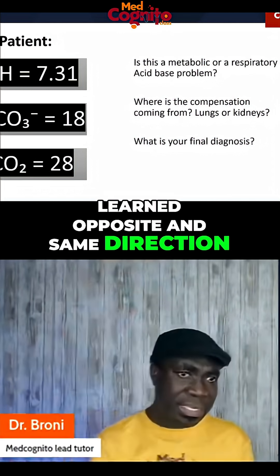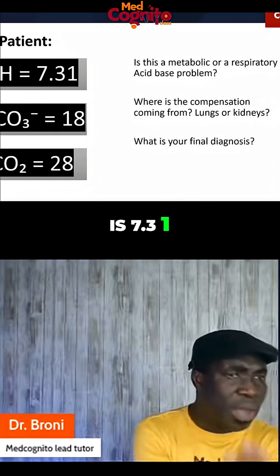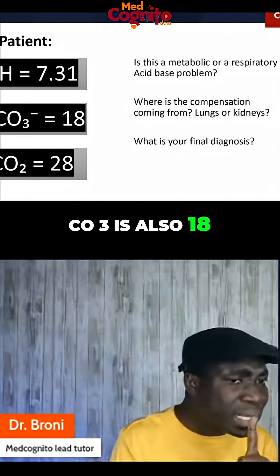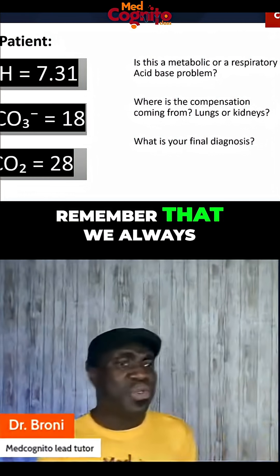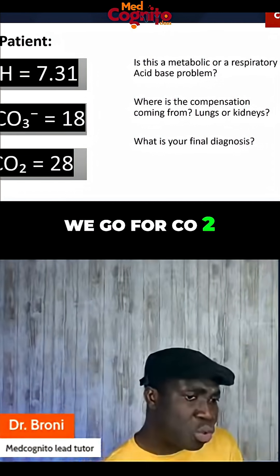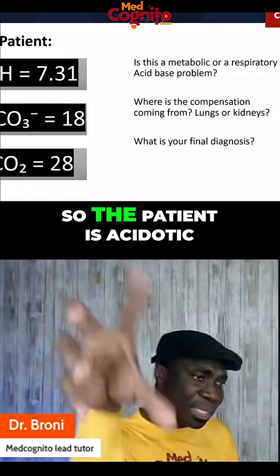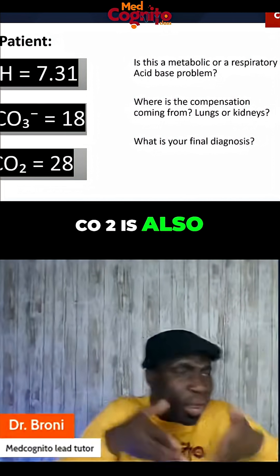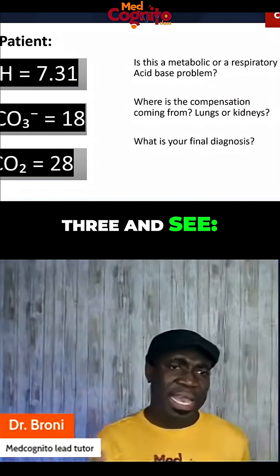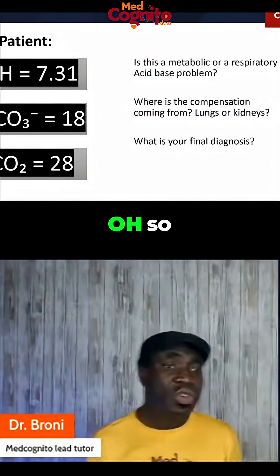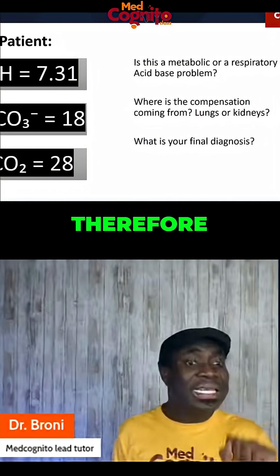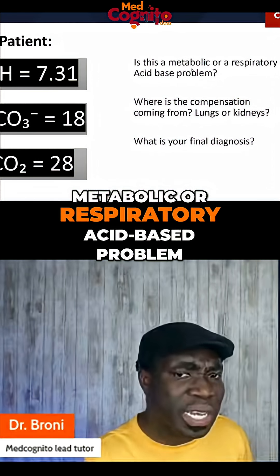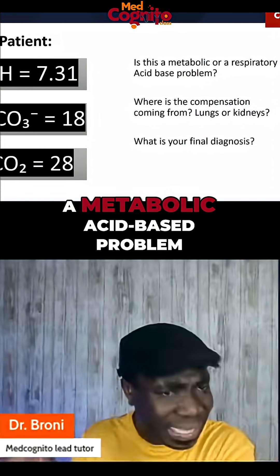Don't forget what we learned — opposites and same direction. pH is 7.31, so this is an acidosis problem. Remember that after pH, we go for CO2. pH is 7.31, so the patient is in acidosis. CO2 is 28 and it is also going down. So we have pH going down and CO2 also going down. Therefore, let's bring in HCO3 and see — is HCO3 going in the same direction? Down, down, down. Therefore, this is a metabolic acidosis problem. The answer is: it's a metabolic acid-base problem.